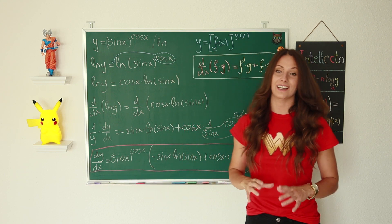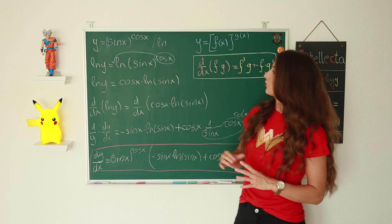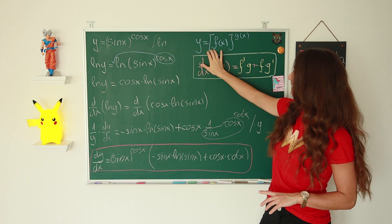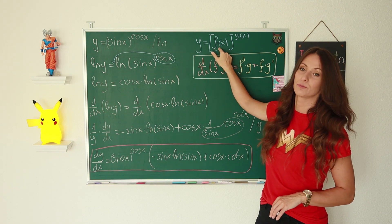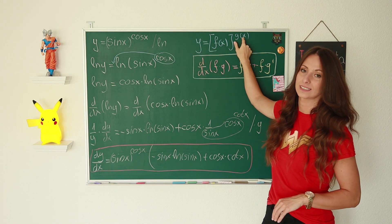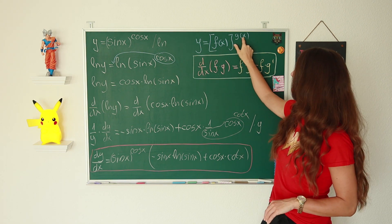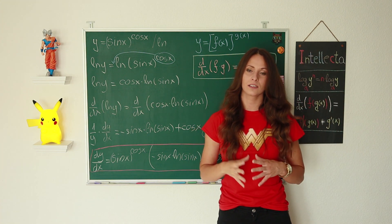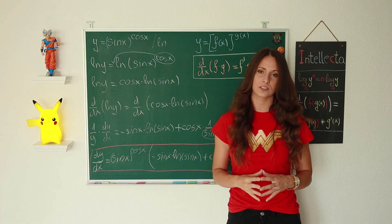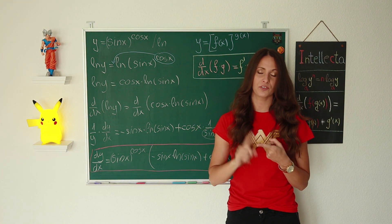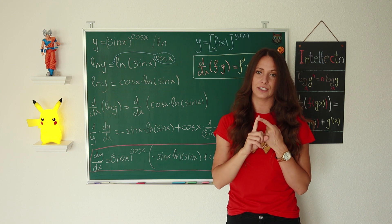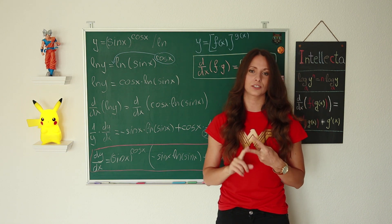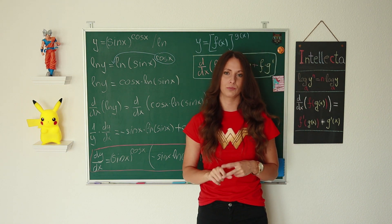So once again, when you want to find the derivative of a function where you have one function in the base and the second one in the exponent, you can apply the logarithmic differentiation. You have two steps: the first one is to take the logarithm of both sides, and the second one is to differentiate both sides.